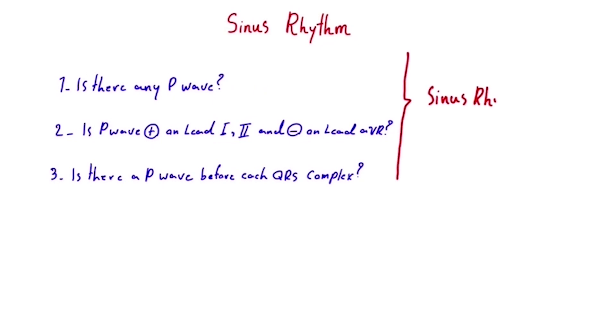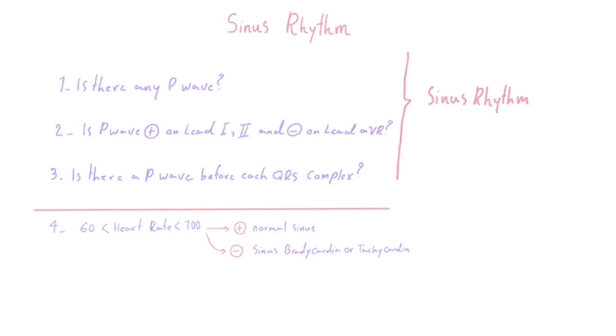But there is one more important question. Four, is the heart rate between 60 and 100 beats per minute? If the answer is also yes, then we have a normal sinus rhythm. If not, then we may be dealing with either sinus tachycardia, if the rate is above 100, or sinus bradycardia, if the rate is below 60. But why are these questions so important?